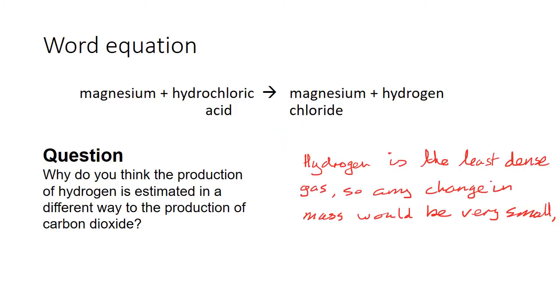So the only question followed on from the magnesium experiment with hydrochloric acid that produced magnesium chloride and hydrogen. And the question said, why do you think that the production of hydrogen was estimated in a different way to the production of carbon dioxide?